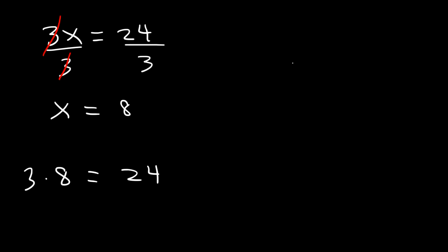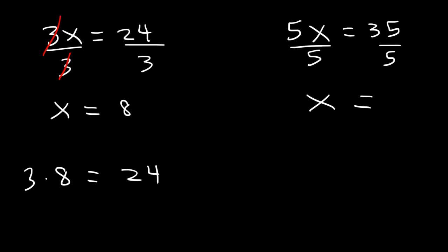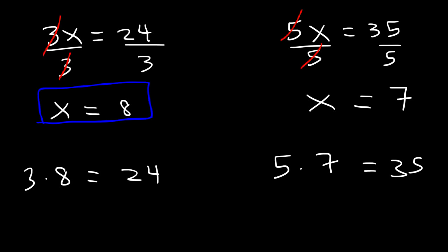Let's try a similar problem. If 5x is equal to 35, what is the value of x? If we divide both sides by 5, x is going to be 35 divided by 5, which is 7. Because 5 times 7 is 35. So these are the solutions to these two equations.